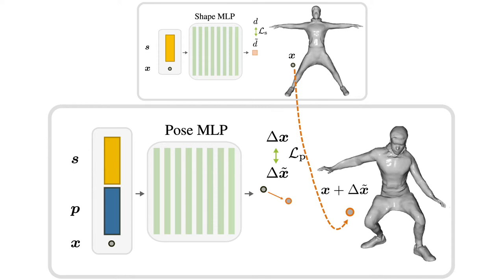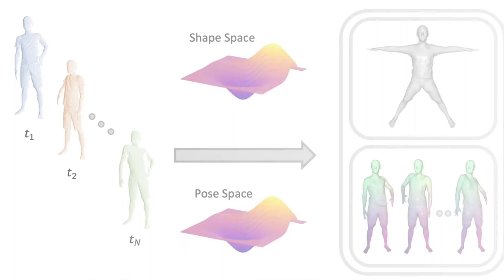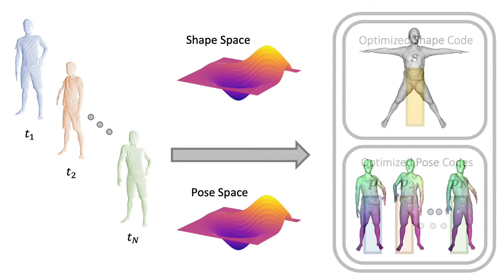Thus, fitting an NPM to an input sequence of N frames amounts to jointly optimizing for a single shape code, as well as for N pose codes, that best explain the observations.